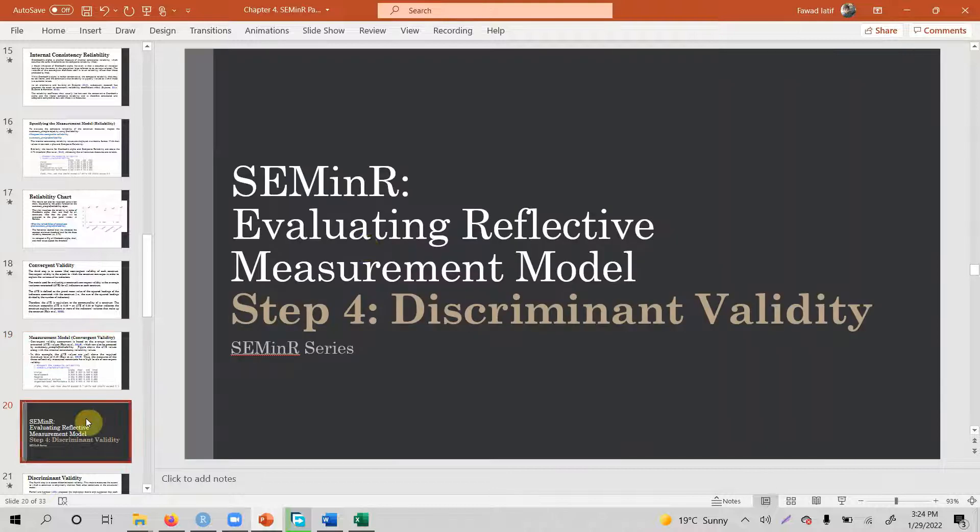Now in the next session we are going to look into step 4. That is discriminant validity as part of evaluating reflective measurement model. Thank you very much.